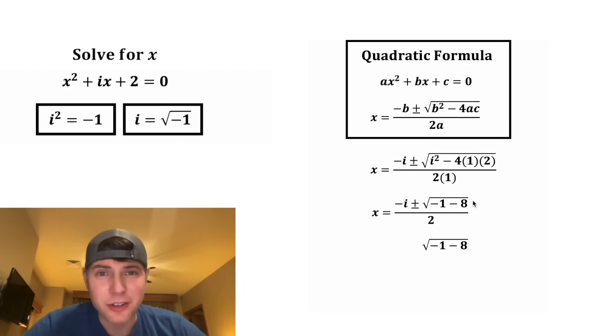Next, let's focus on this radical. We have negative 1 minus 8, which is equal to negative 9. We can split up this root negative 9 to be root negative 1 times root 9. And now this root negative 1, if we look up here, is equal to i. So we can change this into i. And then the root 9 is equal to 3.